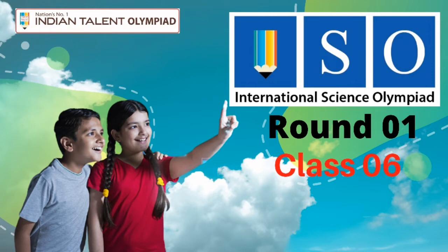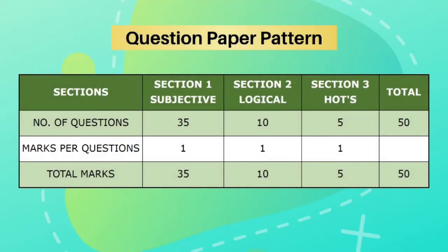Hello everyone, welcome to Indian Talent Olympiad. Today we will go through the round 1 question papers of ITO's International Science Olympiad for class 6. The question paper consists of 50 questions: 35 questions are subjective, 10 questions are of logical reasoning, and 5 questions are of high order thinking. This 50-question exam holds 50 marks. So let us begin.